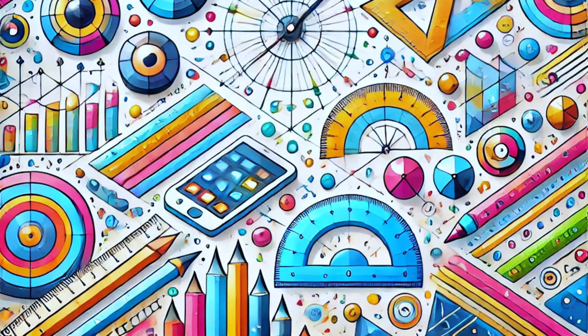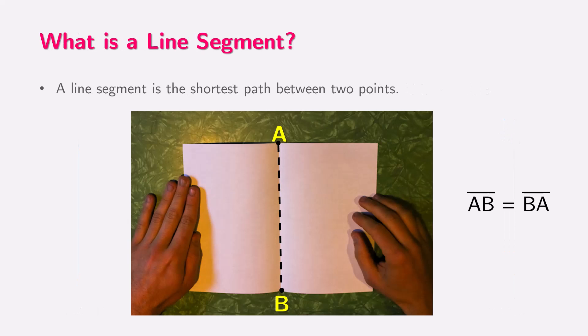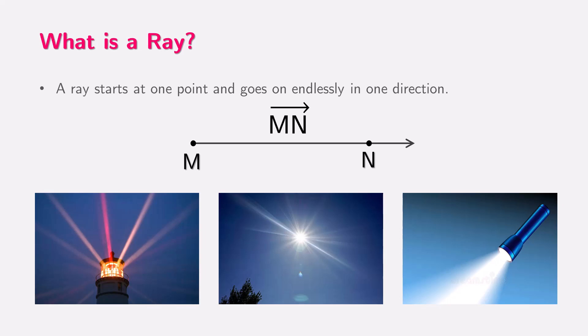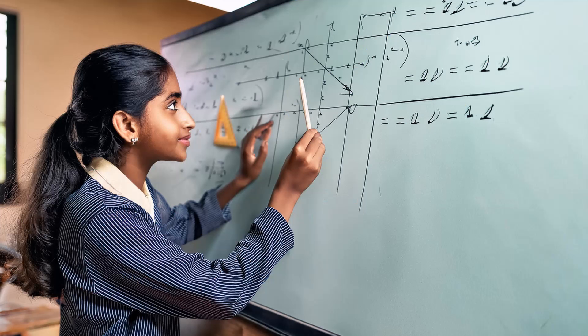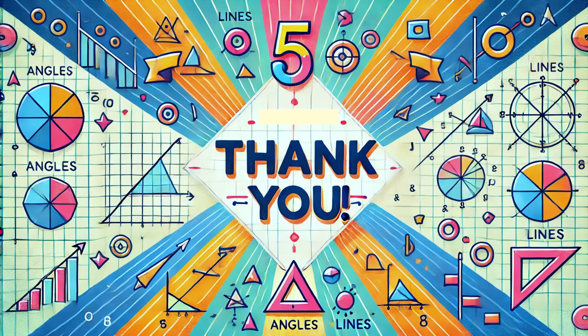Fantastic job! You've learned some really important geometry concepts. You explored points, which are like tiny dots that mark specific locations. You learned about line segments, which are straight parts of a line with two endpoints. You also discovered lines, which extend forever in both directions, and rays, which start at one point and go on forever in one direction. You didn't just learn these concepts. You also solved some fun problems using them. That's awesome! The more you practice, the better you'll understand these ideas. Keep exploring and practicing, and soon, you'll be a geometry expert. Remember, every problem you solve helps you get even better at understanding how geometry works. Keep up the great work, and have fun with your learning!